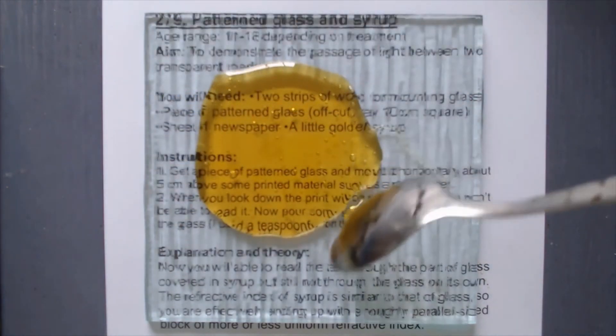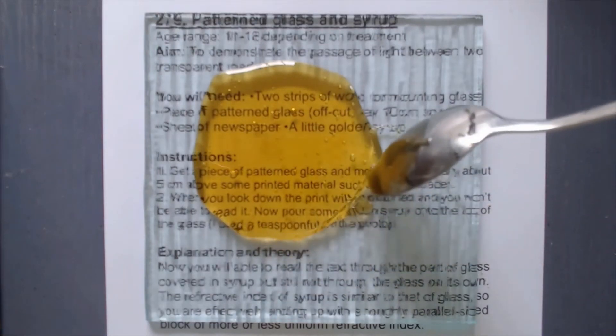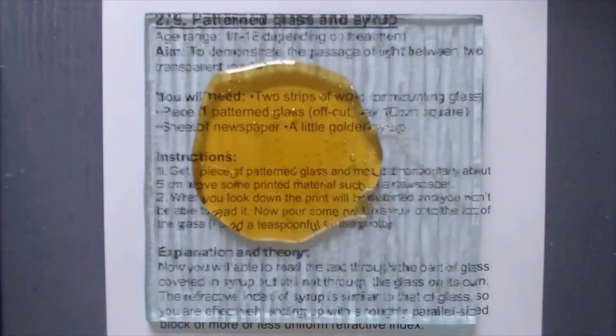And so we've basically got a parallel-sided block of glass and syrup. The bottom face of the glass touching the table is flat, and the top face of the syrup is also flat.